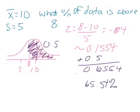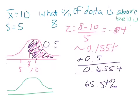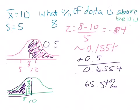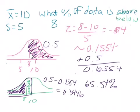We still have to add the upper half, which is 0.5, so 0.1554 plus 0.5 means 65.54% of the data is greater than 8. If the problem had asked for the percentage below 8 instead, we'd go 0.5 minus 0.1554 and get 0.3446 — which makes sense because 0.3446 plus 65.54% adds up to 100%.